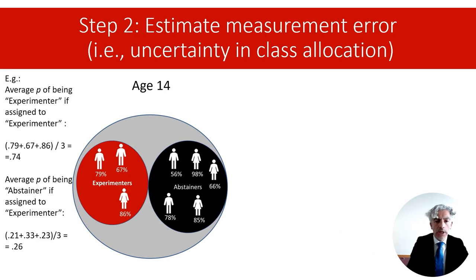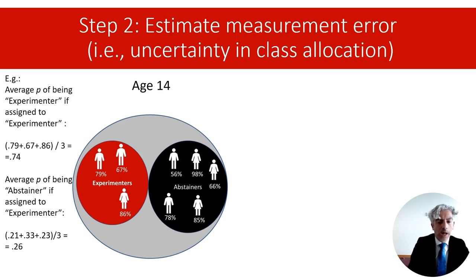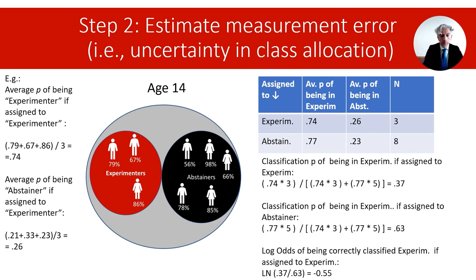Focusing on age 14, three individuals have been assigned to latent class experimenters and five to latent class abstainers. We can calculate the average probability of being in each class for those assigned to it. For the three people assigned to experimenters, that would be (0.79 + 0.76 + 0.86) / 3. Since these probabilities add to one, the average probability of being an abstainer when people are considered experimenter members is (0.21 + 0.33 + 0.23) / 3, that is 0.26. We can report these probabilities in a table like the one shown here.